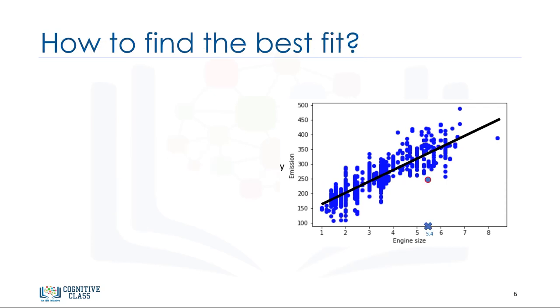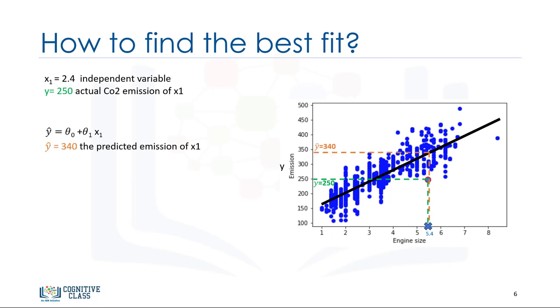For a moment, let's assume we've already found the best fit line for our data. Now, let's go through all the points and check how well they align with this line. Best fit here means that if we have, for instance, a car with engine size x1 equals 5.4 and actual CO2 equals 250, its CO2 should be predicted very close to the actual value, which is y equals 250, based on historical data. But, if we use the fit line, or better to say using our polynomial with known parameters to predict the CO2 emission, it will return y hat equals 340. Now, if you compare the actual value of the emission of the car with what we've predicted using our model, you will find out that we have a 90 unit error. This means our prediction line is not accurate. This error is also called the residual error.